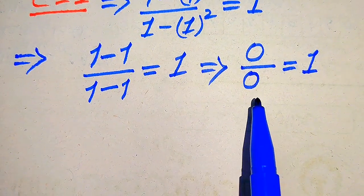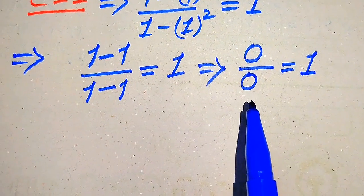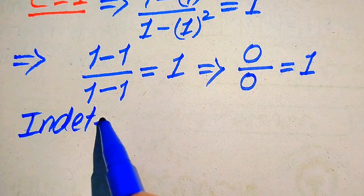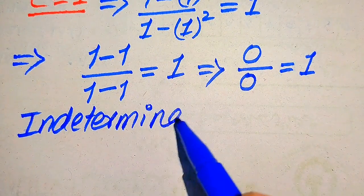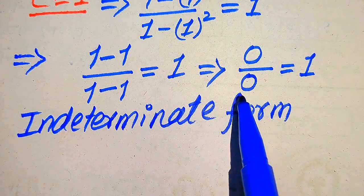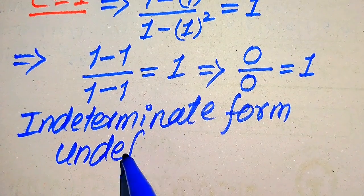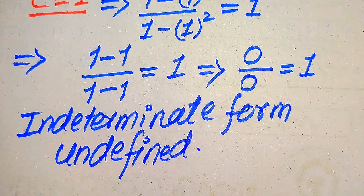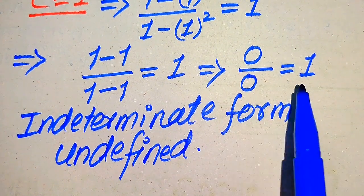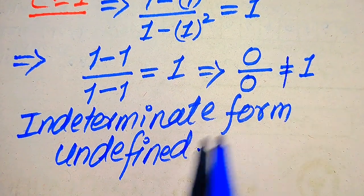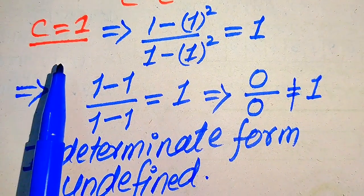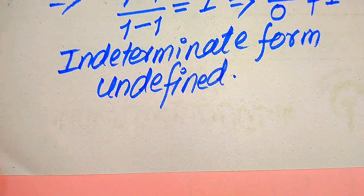Now I will explain this 0 over 0 form. We usually call this the indeterminate form, or in other words it is called the undefined form. This undefined 0 over 0 simply means it is undefined. If the left hand side is undefined, it is not equals to the right hand side, so it is not possible that 0 over 0 is equals to 1. This means the value C equals 1 does not satisfy our given question statement.